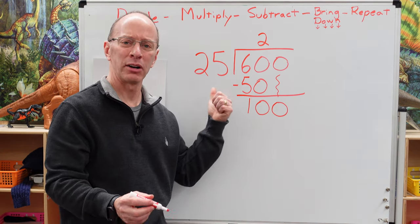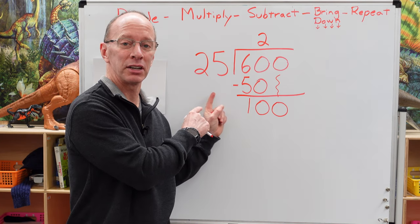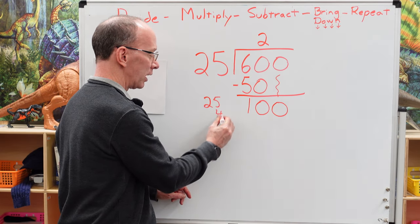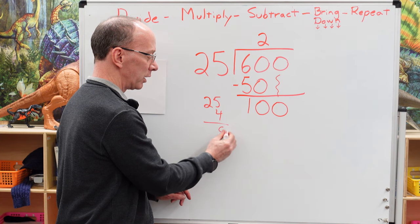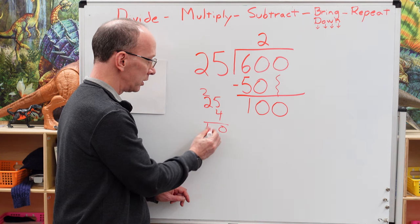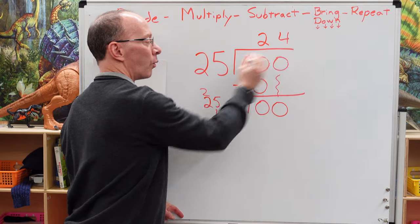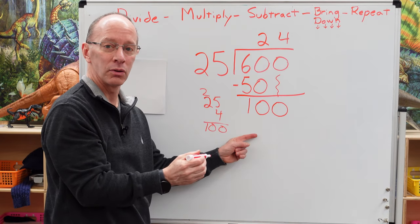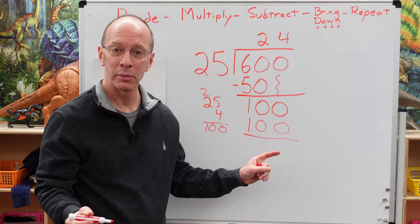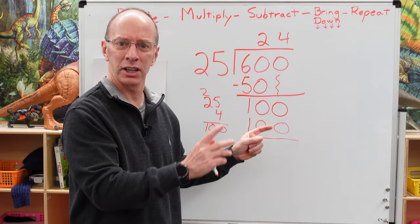Remember when I was talking about quarters — when you have four quarters, that equals a dollar? That's the same thing right here. 4 times 25: 5 times 4 is 20, carry the 2, 4 times 2 is 8, plus the 2 is 100. So I put the 4 right here. 4 times 25 equals 100, and I have no remainder. Don't put a remainder of 0, just leave it blank. Wasn't that fun? Let's do another one.